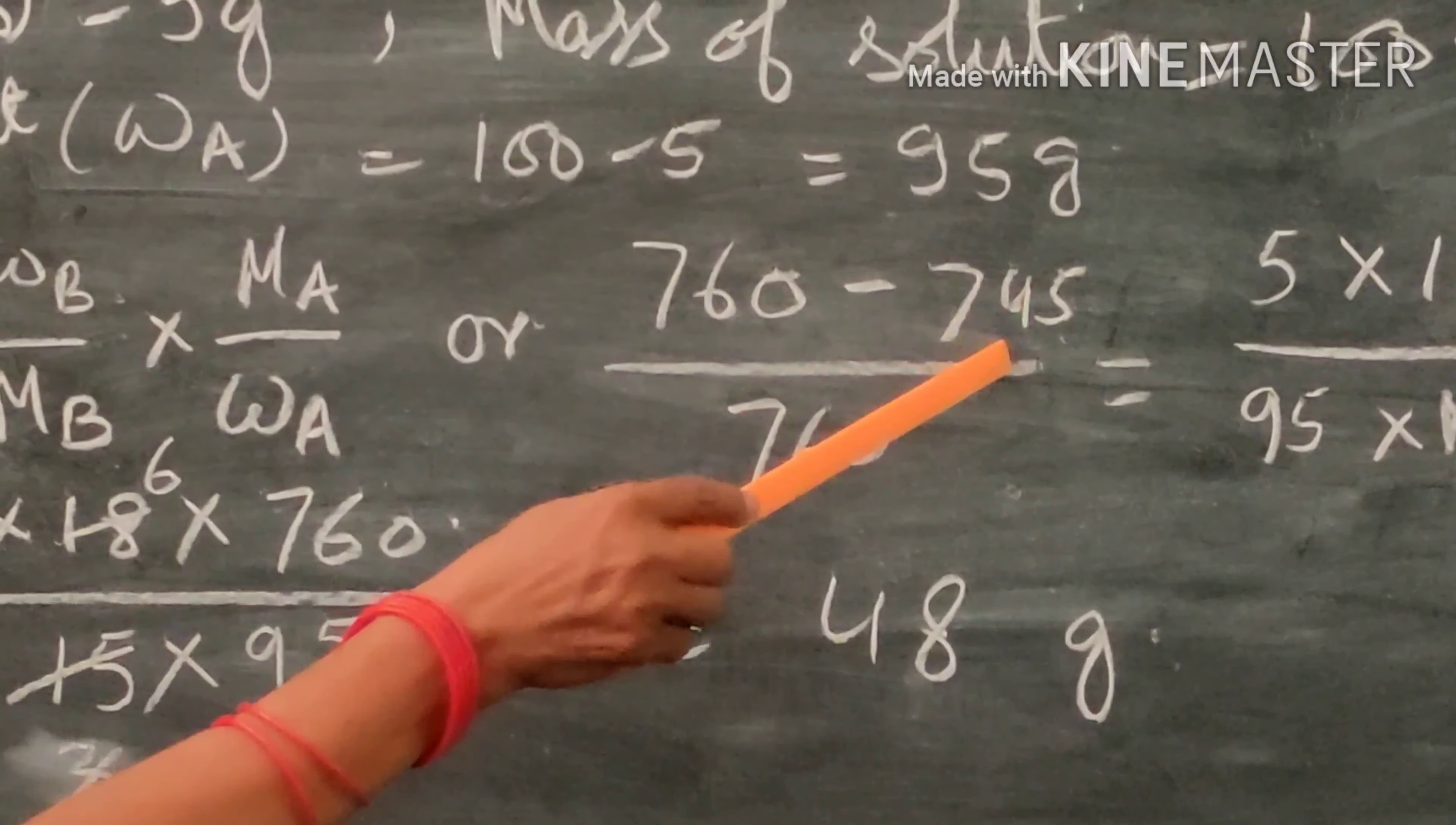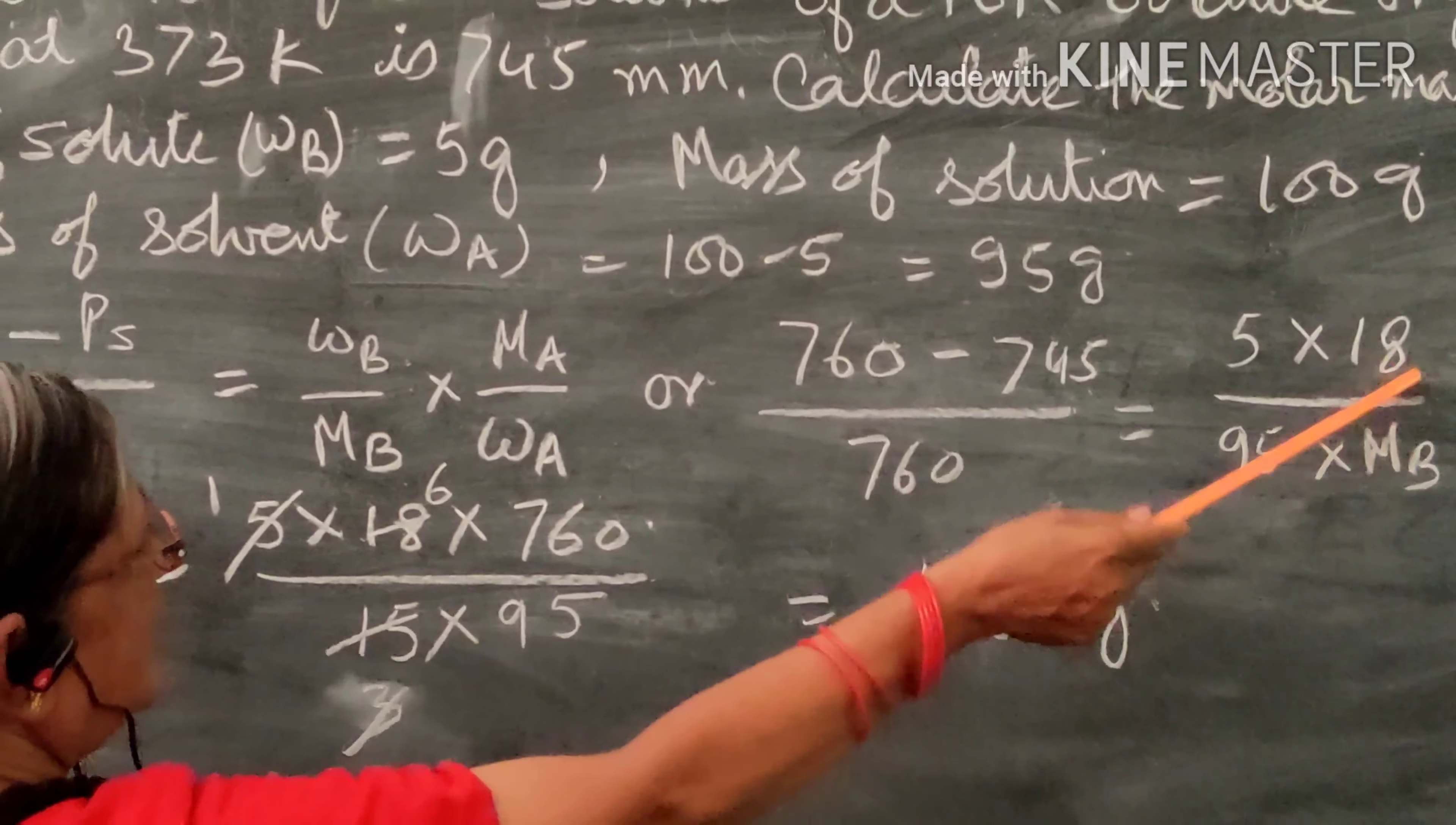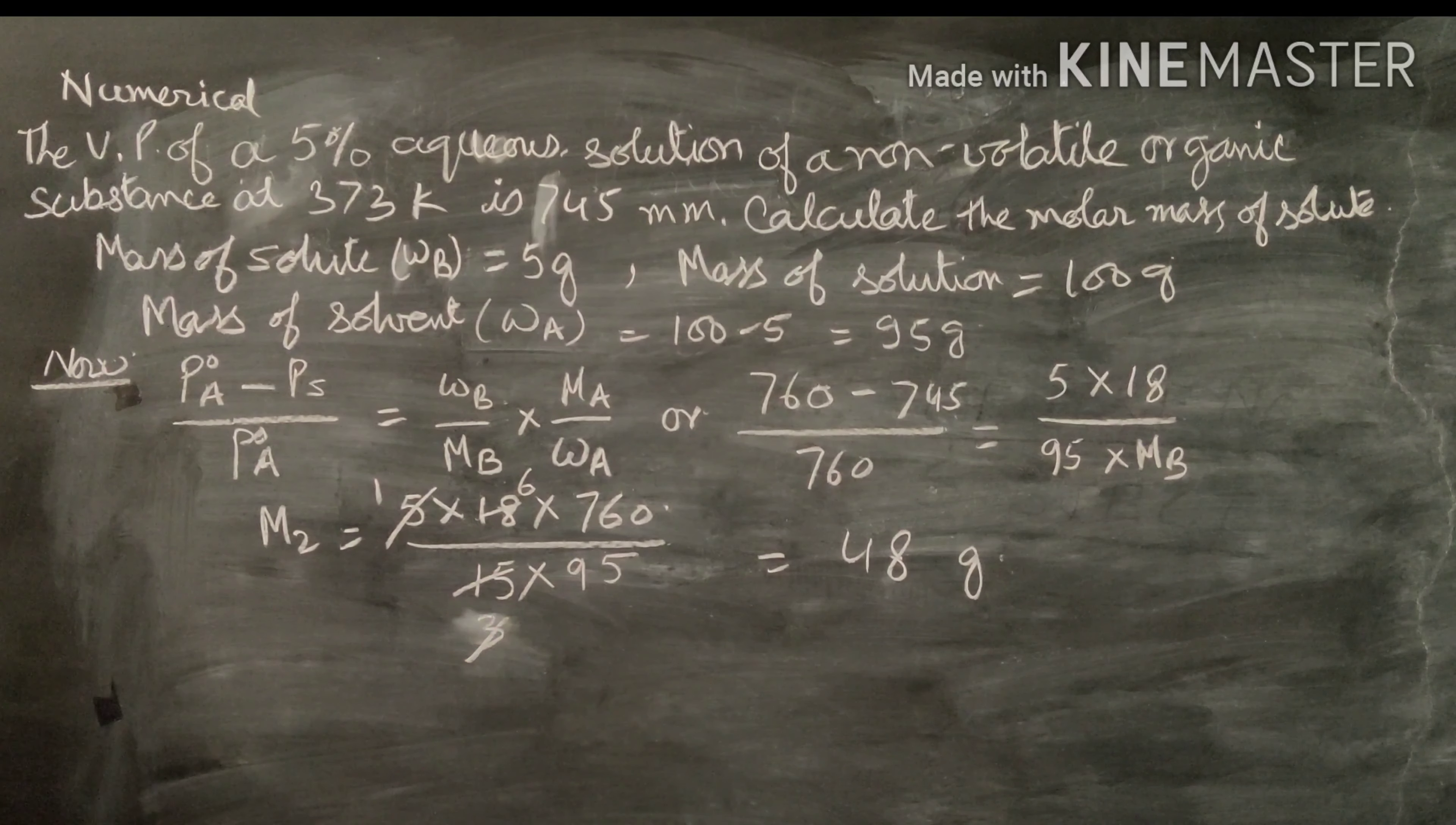So, 760 minus 745 over 760 equals 5 over Mb times 95 over 18. Here, mass of solute is 5 grams, mass of solvent is 95 grams, and molar mass of solvent water is 18. Therefore, Mb equals 5 times 18 times 760 divided by 15 times 95.